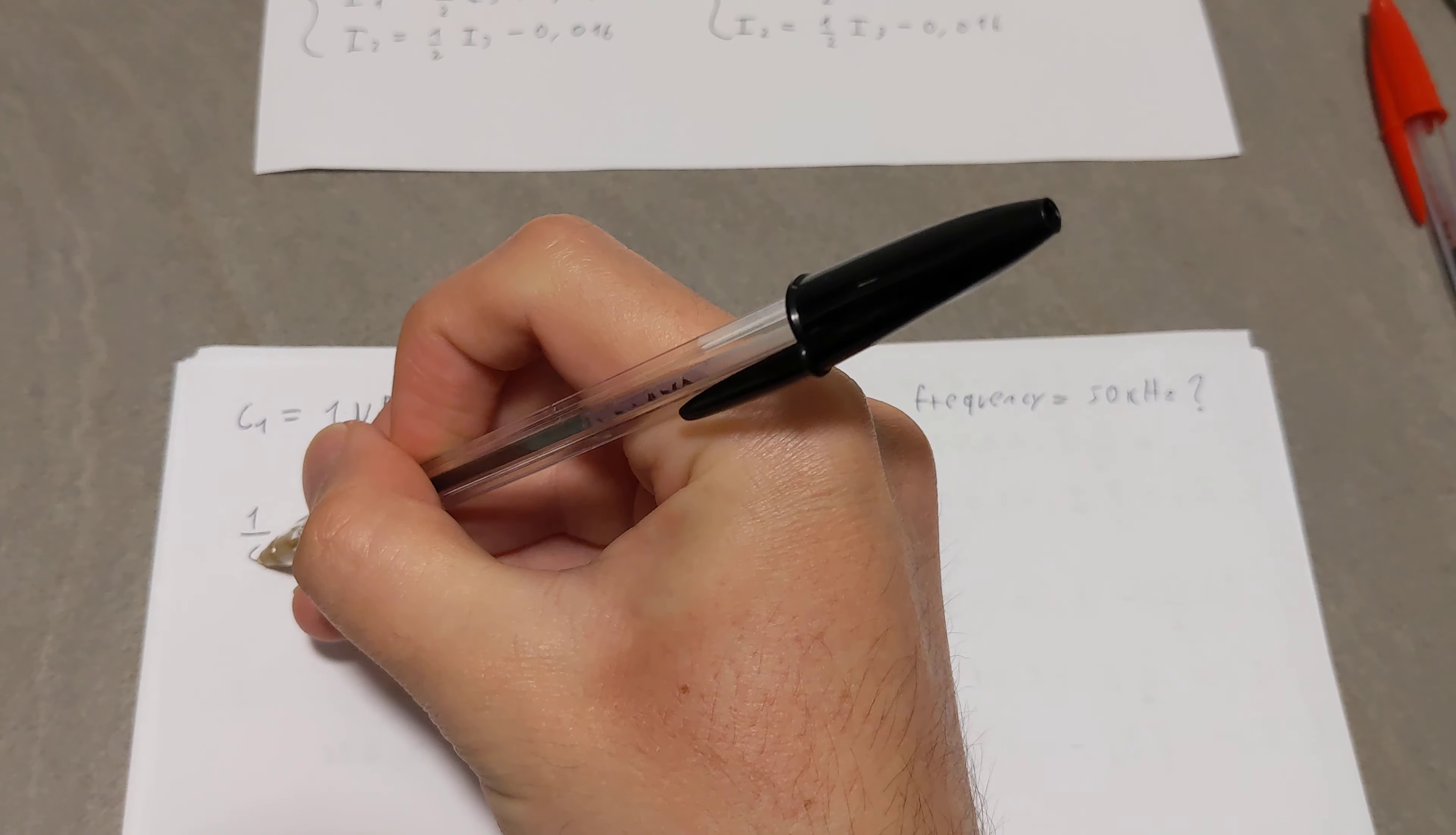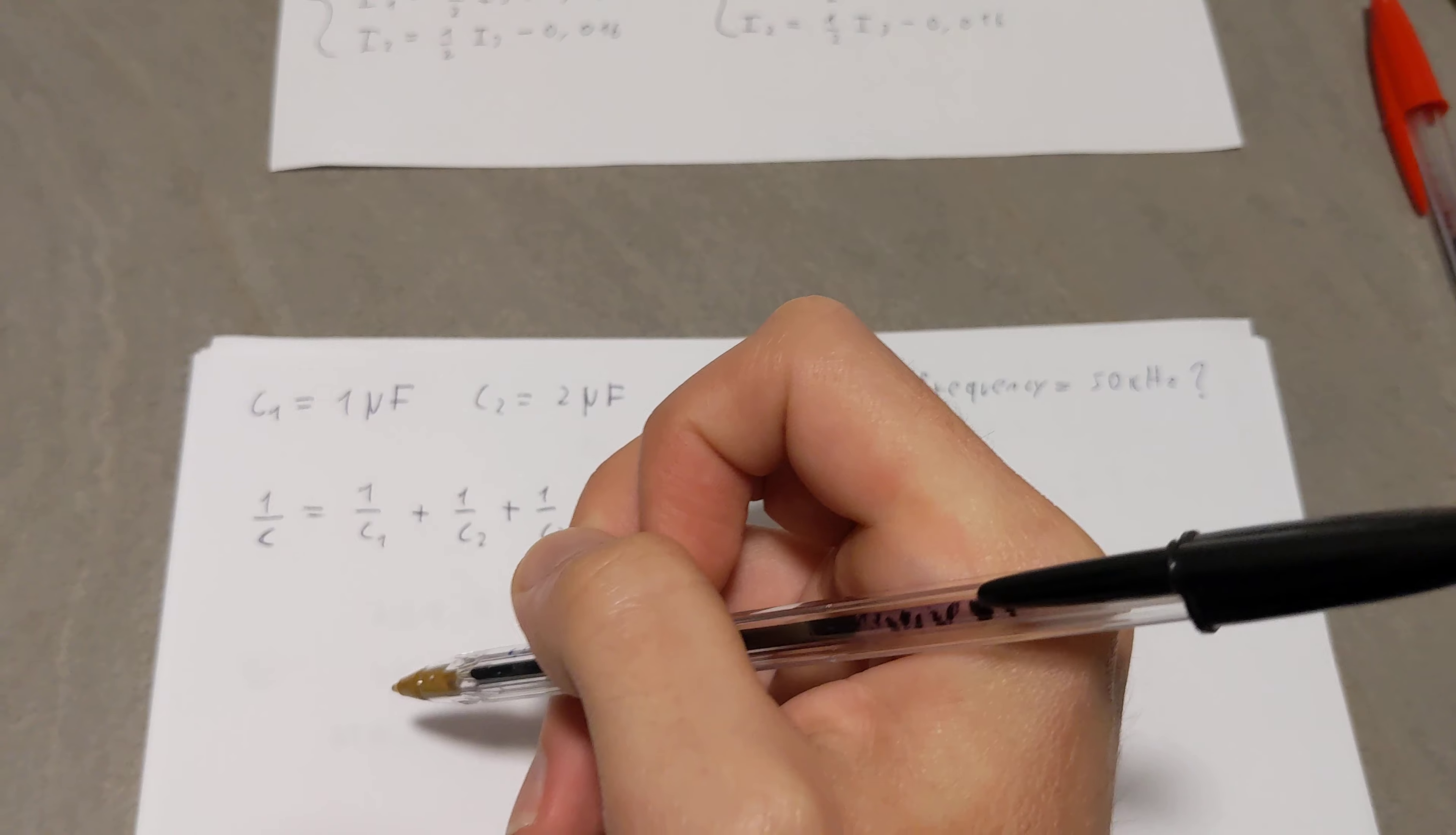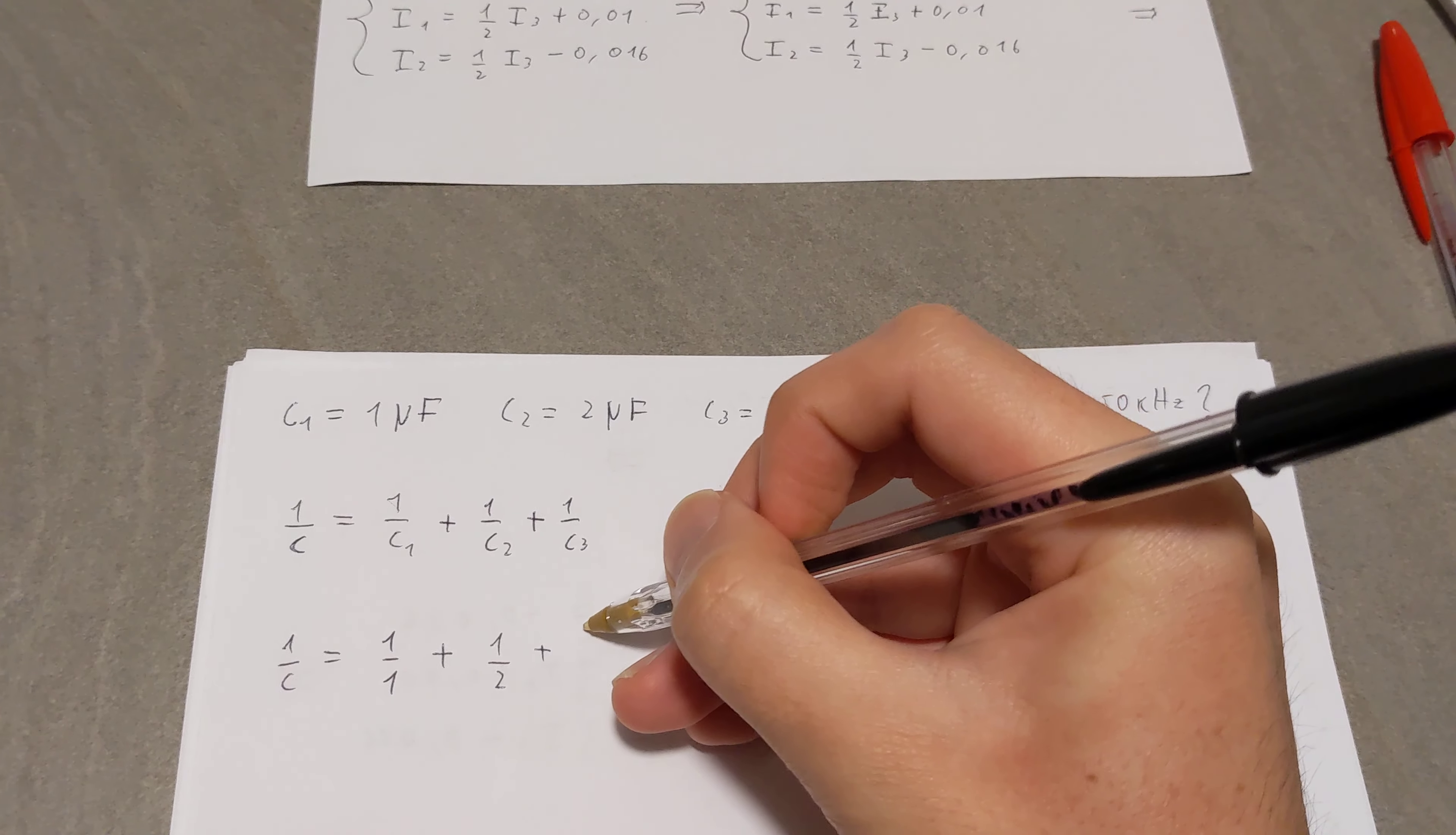we're going to use the following property. We know that 1 over C is essentially 1 over C1 plus 1 over C2 plus 1 over C3. Therefore, we know that 1 over C is equal to 1 over 1 plus 1 over 2 plus 1 over 3.